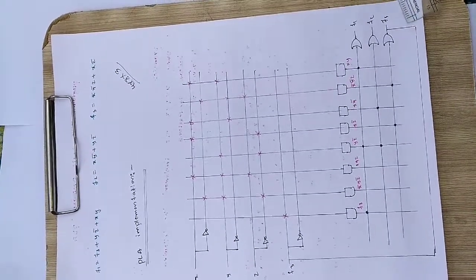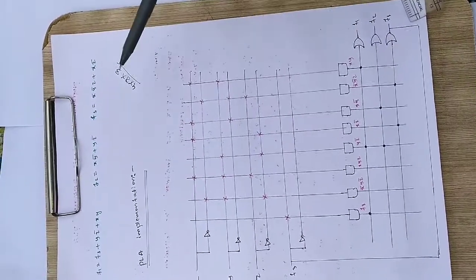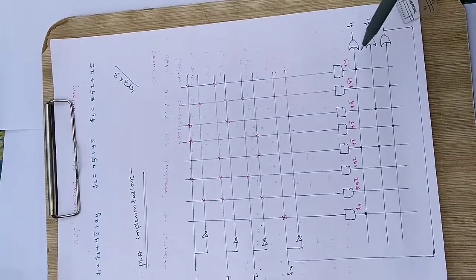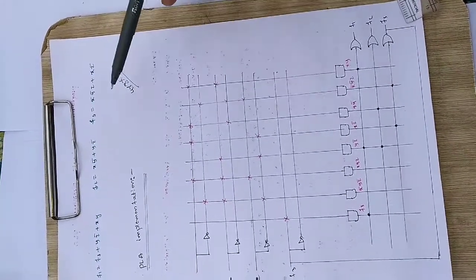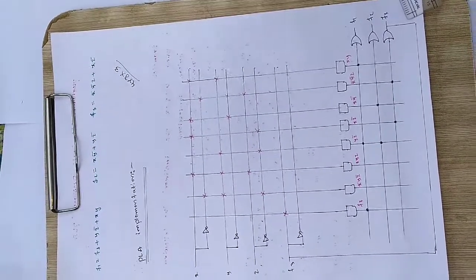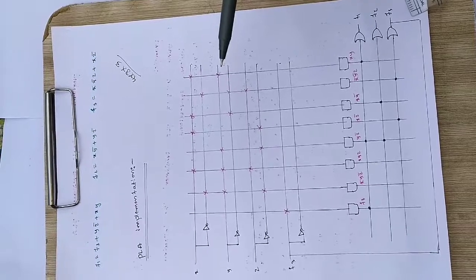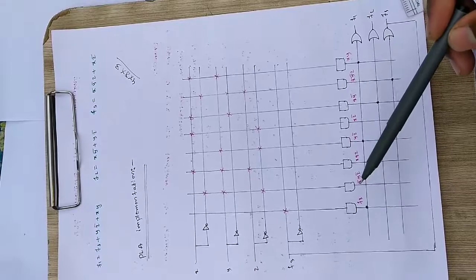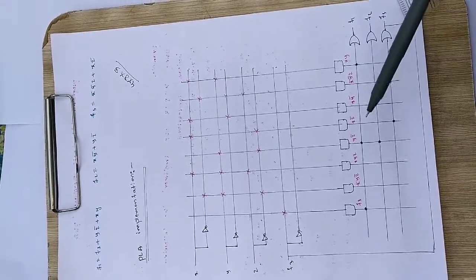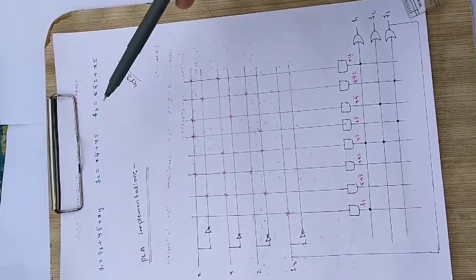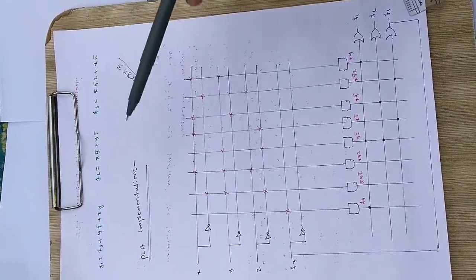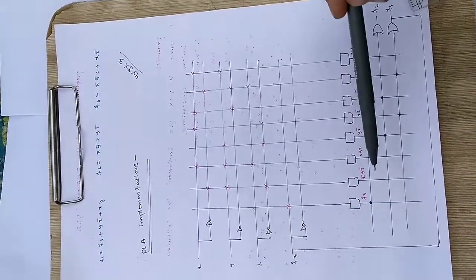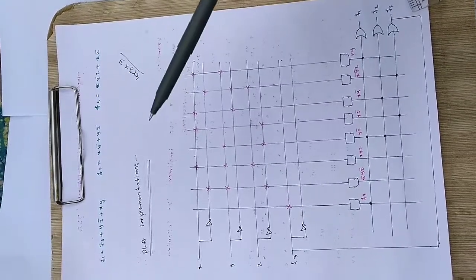We identify the unique product terms from the expressions: X̄YZ̄, X̄ȲZ, XZ̄, XȲ, YZ̄, XY. We assign each to an AND gate and make the appropriate connections. For example, for AND gate producing X̄YZ̄, we solder at X̄, Y, and Z̄. For the gate producing X̄ȲZ, we solder at X̄, Ȳ, and Z. Each AND gate is connected to the relevant input lines by soldering or fusing at the corresponding intersection points.